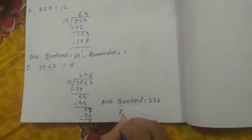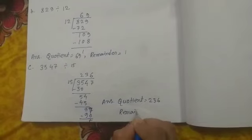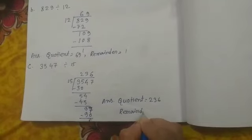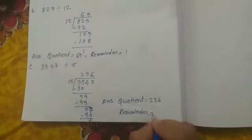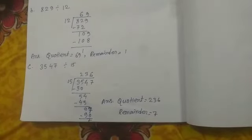Quotient equal to 73, remainder equal to 3.